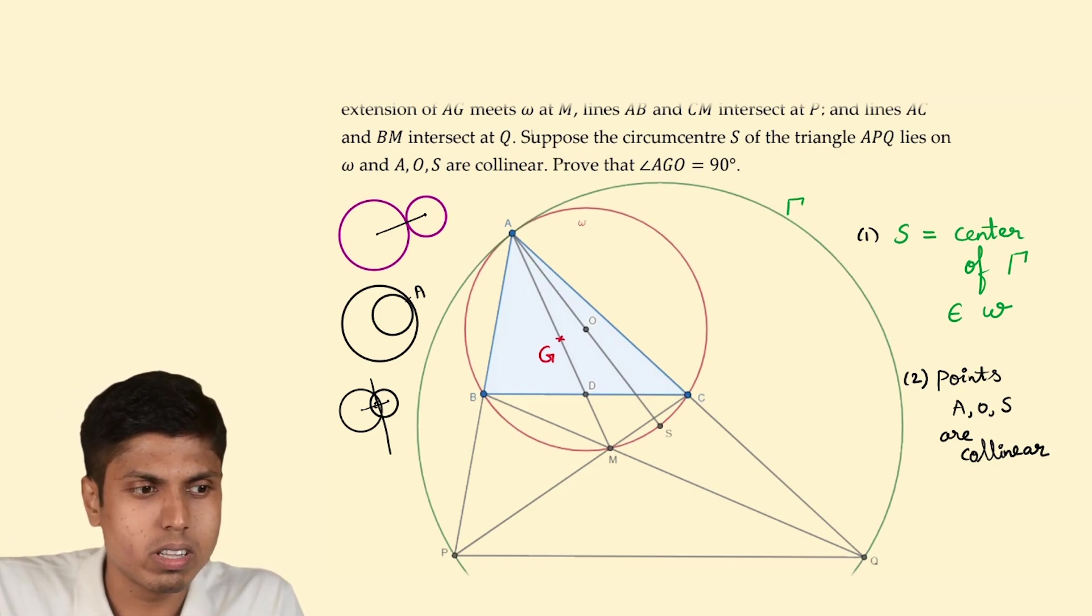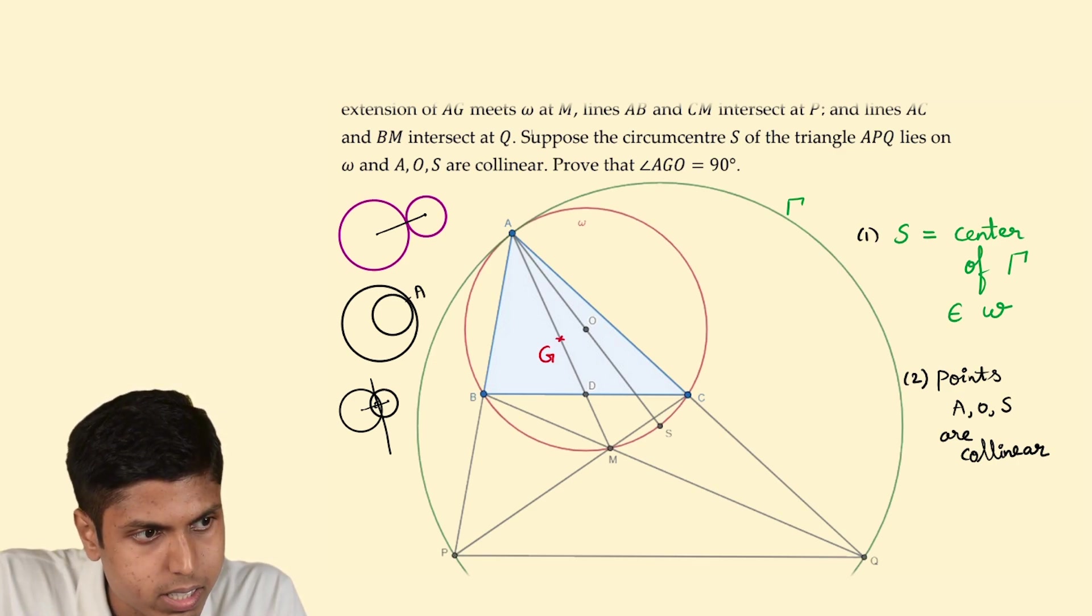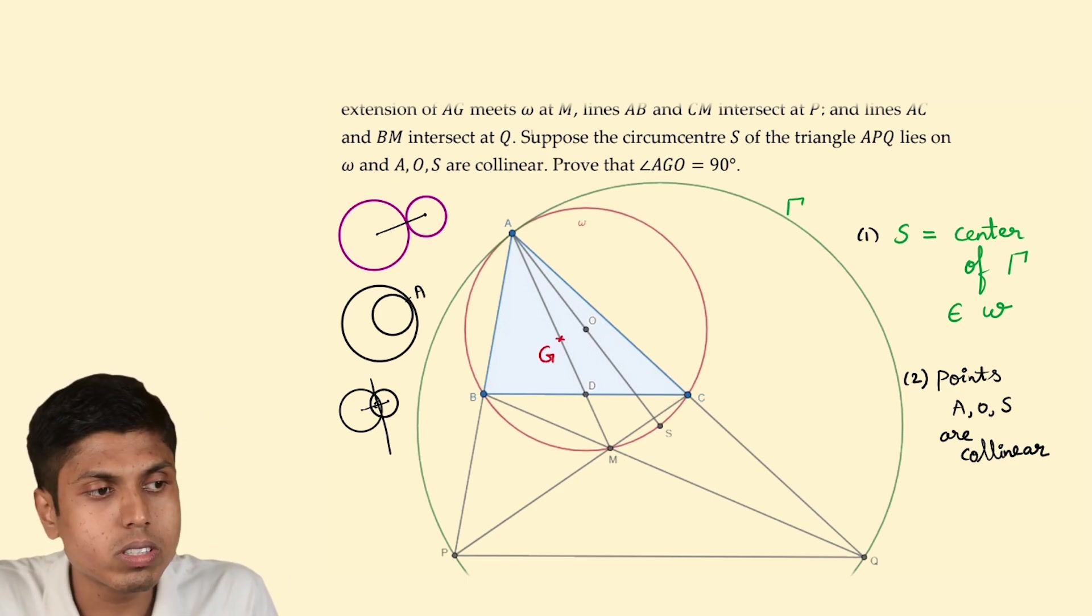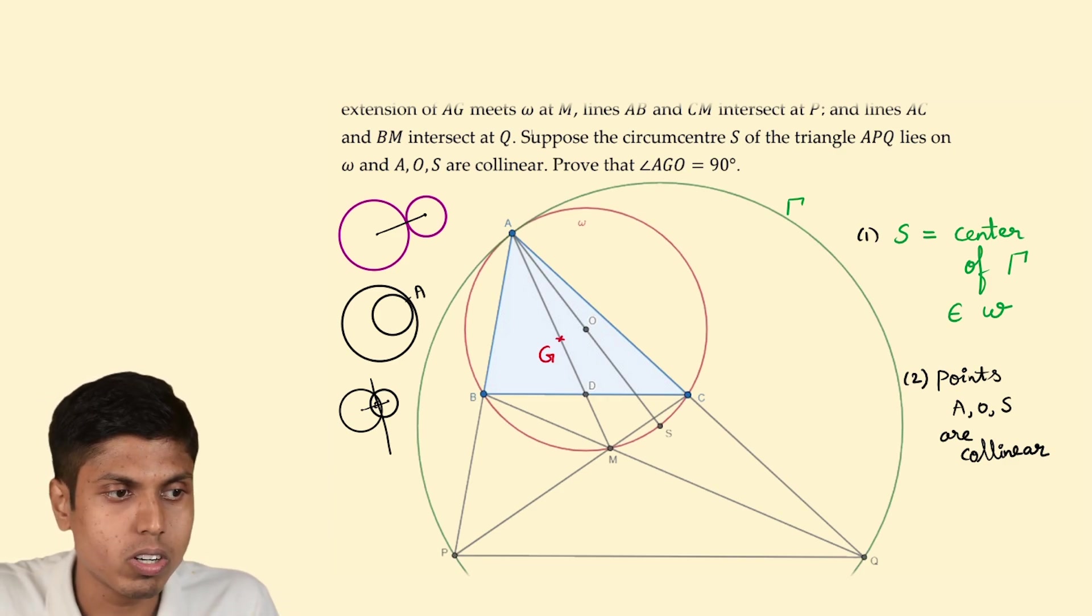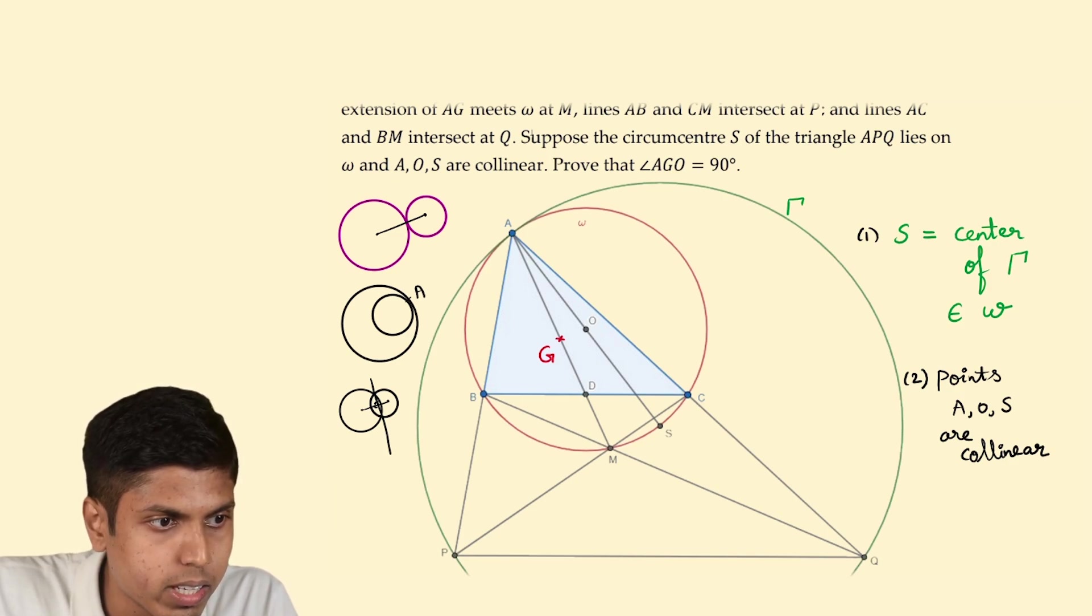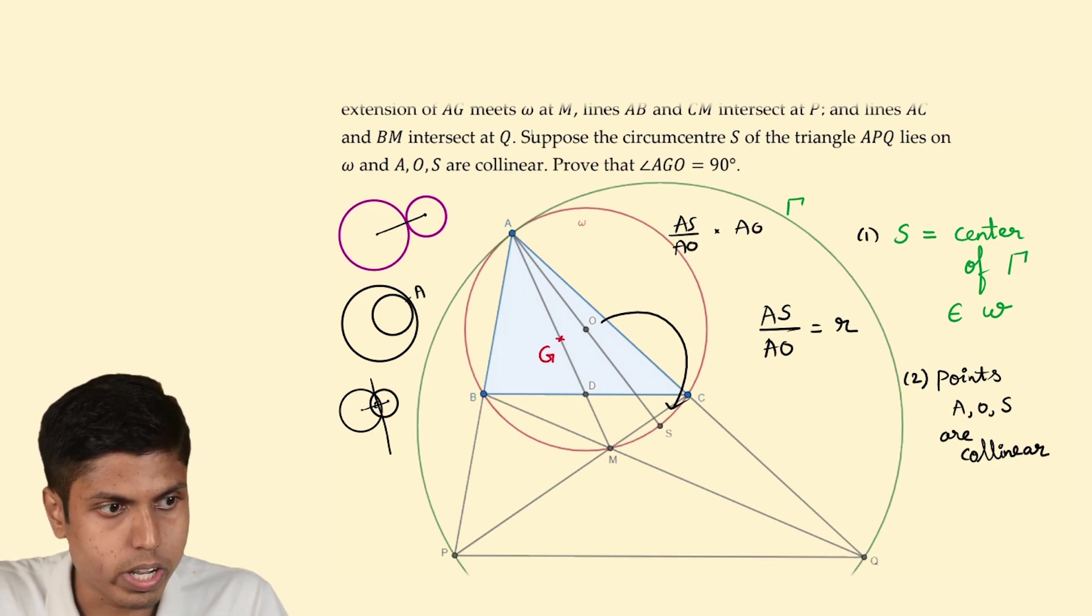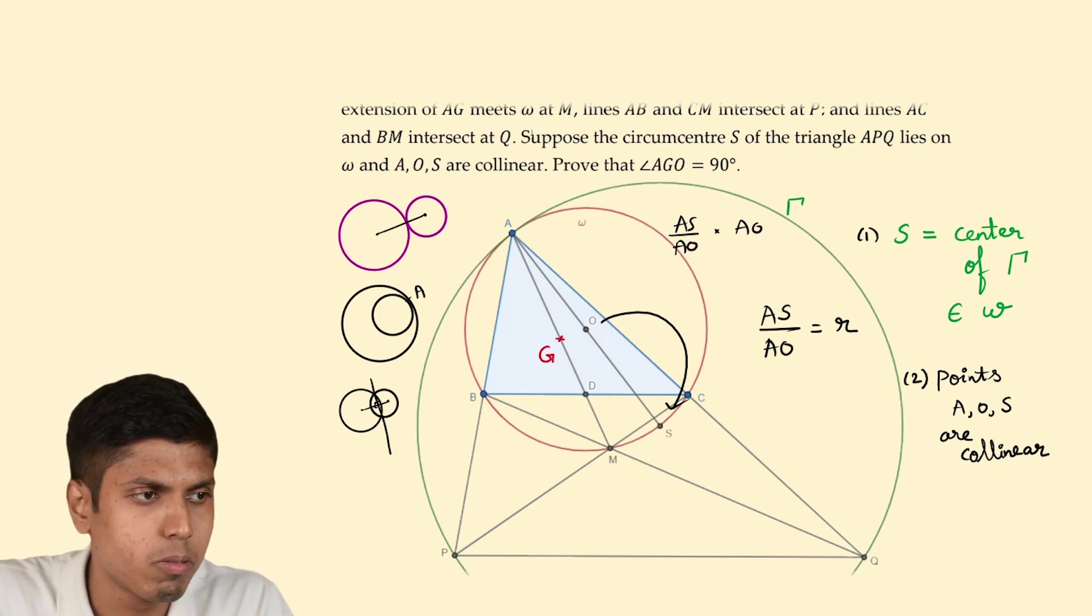So what's the beautiful fact that comes as a consequence of this observation? You could see that there exists a homothety that takes the point O to point S. Due to the circles being tangent, or in other words, the centers being collinear with point A, if you apply a homothety with the ratio AS by AO, the point O shifts to point S. Because AS times AO, which is the ratio multiplied by the distance AO, would take point O to point S.